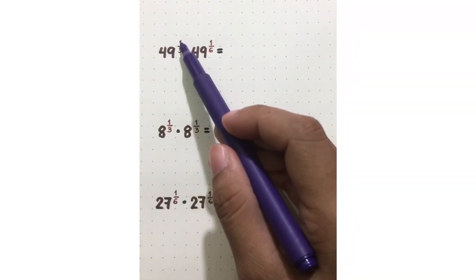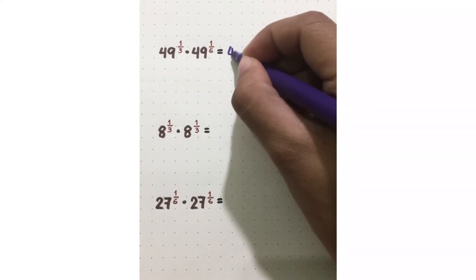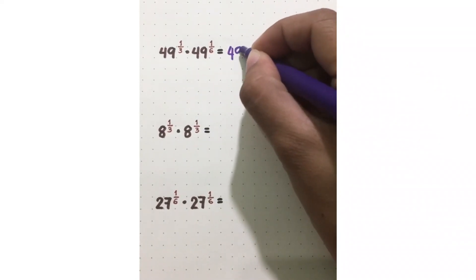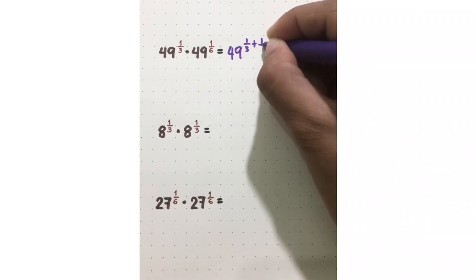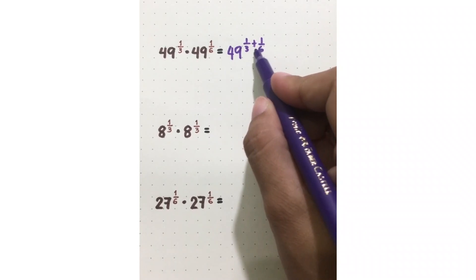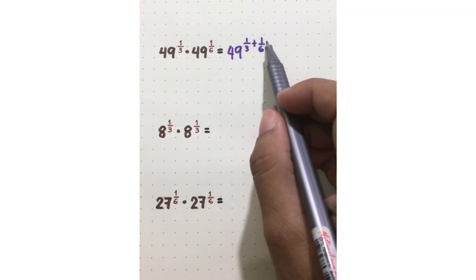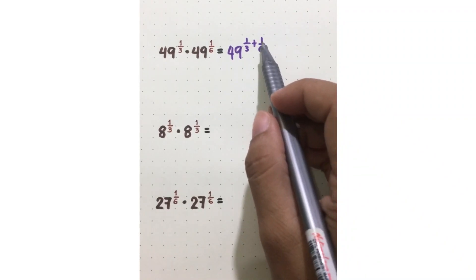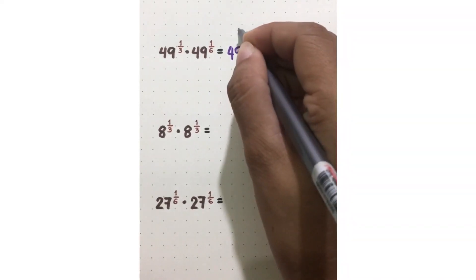Another example: 49 raised to 1 third times 49 raised to 1 sixth. Copy the base 49, then add the exponents: 1 third plus 1 sixth. As you can see, they have different denominators, so we cannot just add their numerators. Instead, we may use the butterfly method or find their LCD. Let's use LCD to solve this.